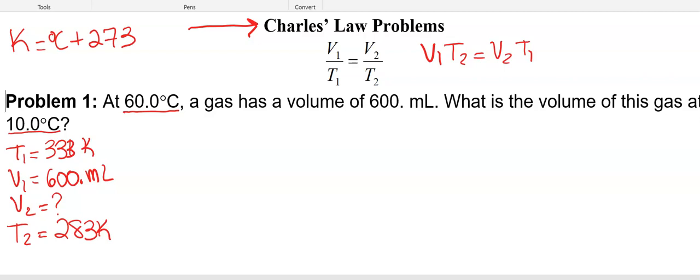So I'm going to now plug things into the equation, but first I need to rearrange. So if up here, V1 T2 equals V2 T1, and we're solving for V2, what we would do is divide both sides by T1 and cross that out. And so you'll now see that V2 equals V1 T2 over T1.